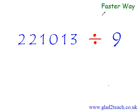The faster way to divide any number by 9 is that you copy the first digit of the dividend as it is, and you have the first answer digit. The next one would be this answer digit plus the next digit of the dividend. So 2 plus 2 is 4.